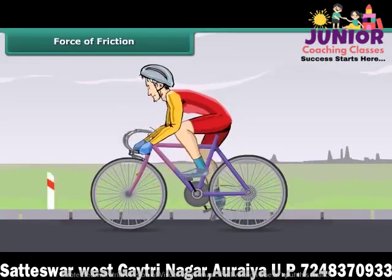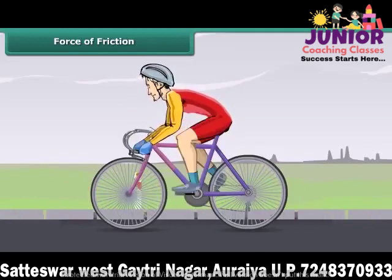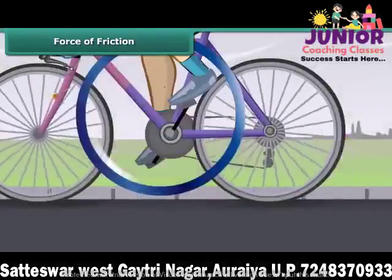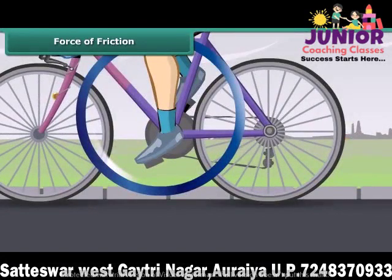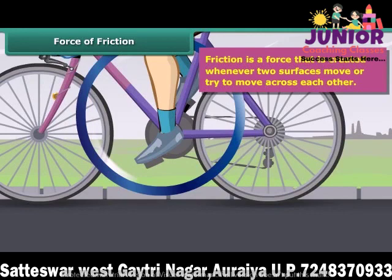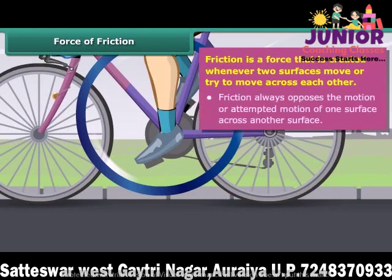Let's take an example from daily life. While moving on a bicycle on the road, you pedal the bicycle and it moves on and on. When you stop pedaling, the bicycle slows down and gradually comes to a stop. Why does this happen? This actually happens because of friction. Friction is a force that is created whenever two surfaces move or try to move across each other. Friction always opposes the motion or attempted motion of one surface across another surface. The force which resists the motion of a body while moving on a surface is called friction.